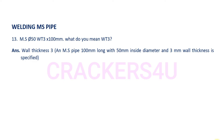Question number thirteen: MS-DAI-50 WT-3 x 100mm — what does WT-3 mean? Answer: Wall thickness 3 mm. Here, an MS pipe 100 mm long with 50 mm inside diameter and 3 mm wall thickness is specified.